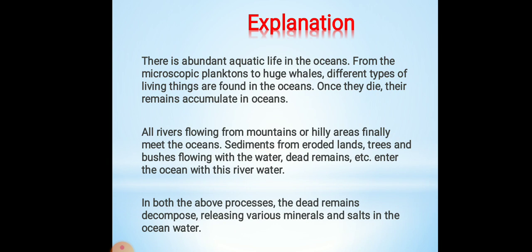There is abundant aquatic life in the oceans, from microscopic plankton to huge whales. Microscopic plankton are small microorganisms in the ocean which we cannot see with the naked eye — we have to see them under a microscope. Different types of living things are found in the ocean. They take birth in the ocean, grow in the ocean, and die in the ocean. Once they die, their remains accumulate in the oceanic bed.